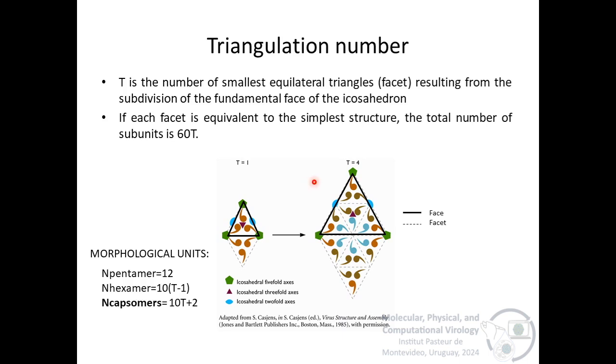For example, in the case of T equals 4, the fundamental face of the icosahedron is divided into 4 facets: 1, 2, 3, and 4. And the total number of morphological units is 240. 60 units are arranged in 12 pentamers and 180 in 30 hexamers. In T equals 4, the total of morphological units are 12 plus 30, 42.